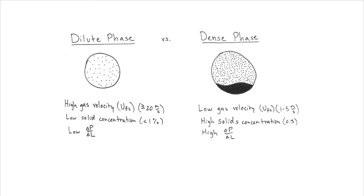In dilute phase transport, which is pictured to the left, the particles are fully suspended in gas and flow as individuals in the gas. To achieve dilute phase transport, a high gas velocity is required and the stream should have a low solid concentration.